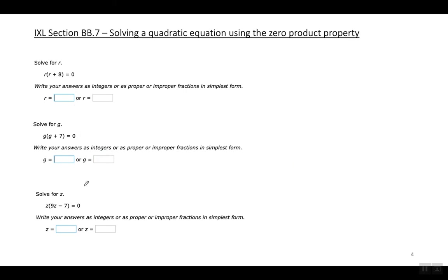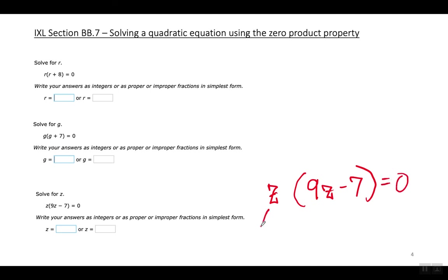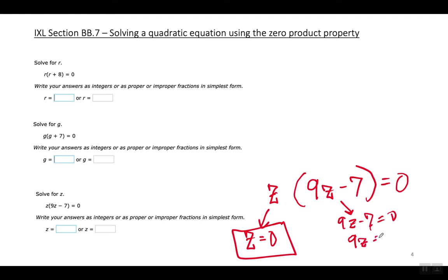The third example: solve for Z, where Z times nine Z minus seven equals zero. Set each factor equal to zero. Z equals zero for the first factor. For nine Z minus seven equals zero, move the seven to the right giving nine Z equals seven, then divide by nine. So Z equals seven over nine. My two answers are Z equals zero and Z equals seven over nine. In IXL, you can write this as seven slash nine.